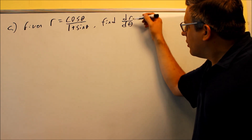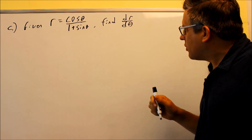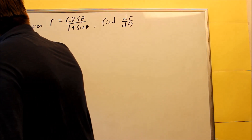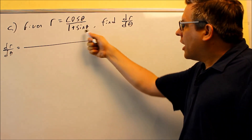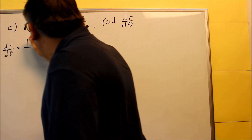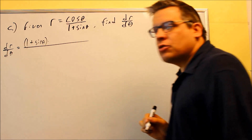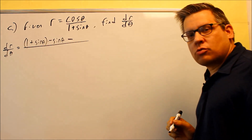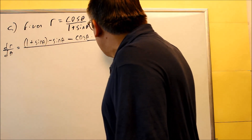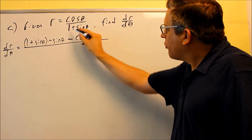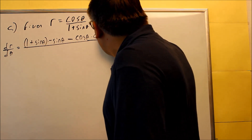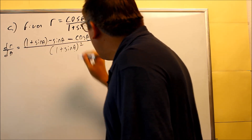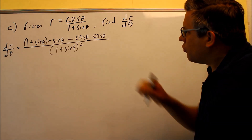For part C, we have another special notation — dr/dθ, taking the derivative of r with respect to theta. We have a fraction, which means we're going to apply the quotient rule. Starting with dr/dθ: the bottom times the derivative of the top, so we get 1 plus sine theta times the derivative of the top. The derivative of cosine is negative sine theta. Minus sign in the quotient rule — minus the top, cosine theta, times the derivative of the bottom. The derivative of 1 plus sine theta is cosine theta, since the derivative of 1 is 0. All this is over the bottom squared.